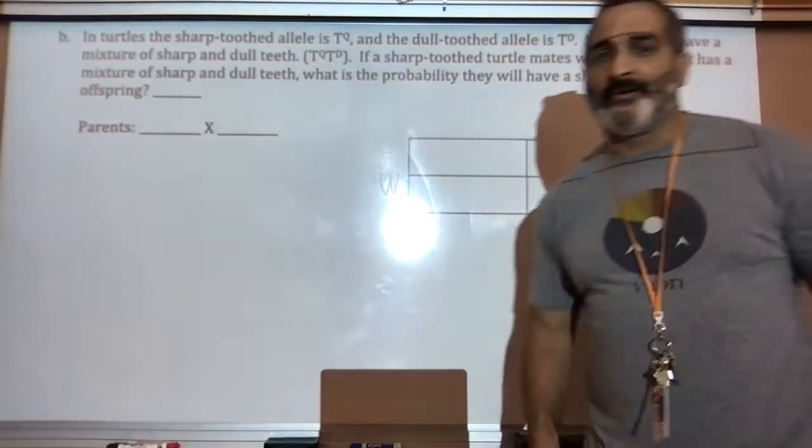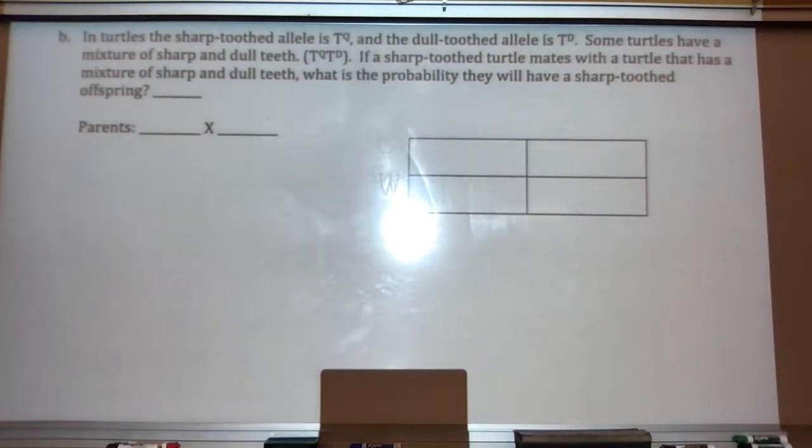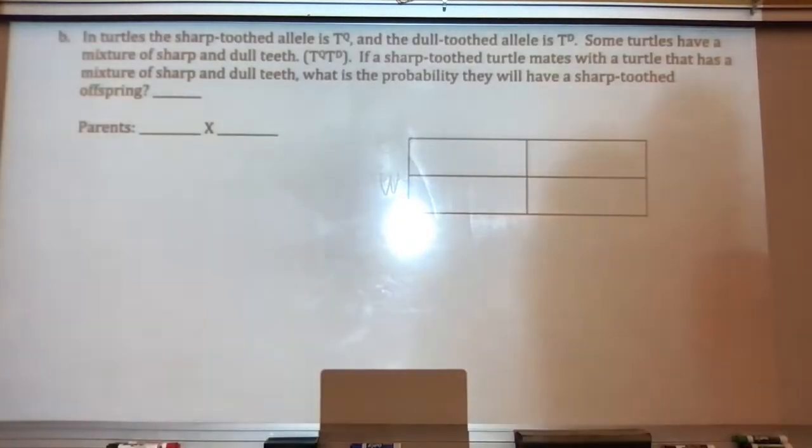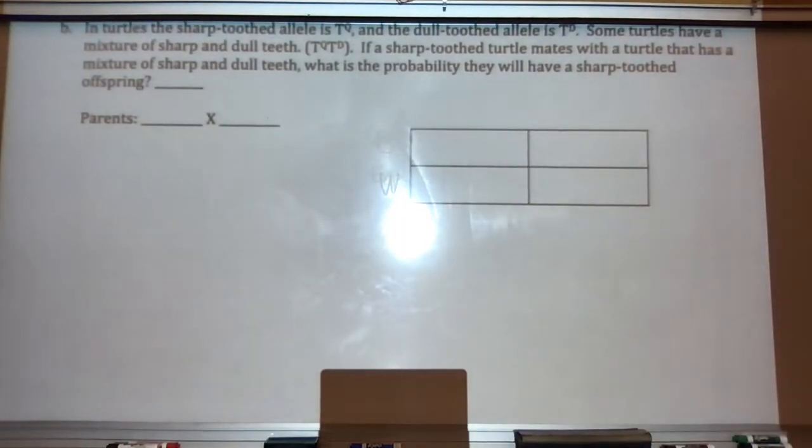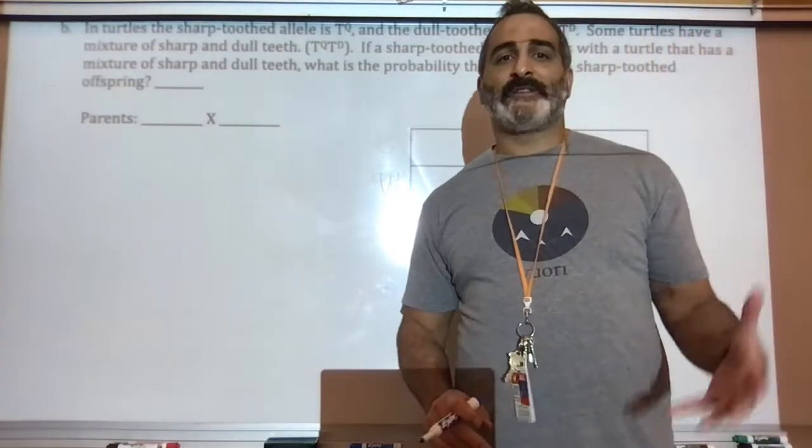Sample problem number two. Here's what it says. In turtles, the sharp tooth allele is T with a capital Q. It's kind of hard to see, but that's a capital Q.